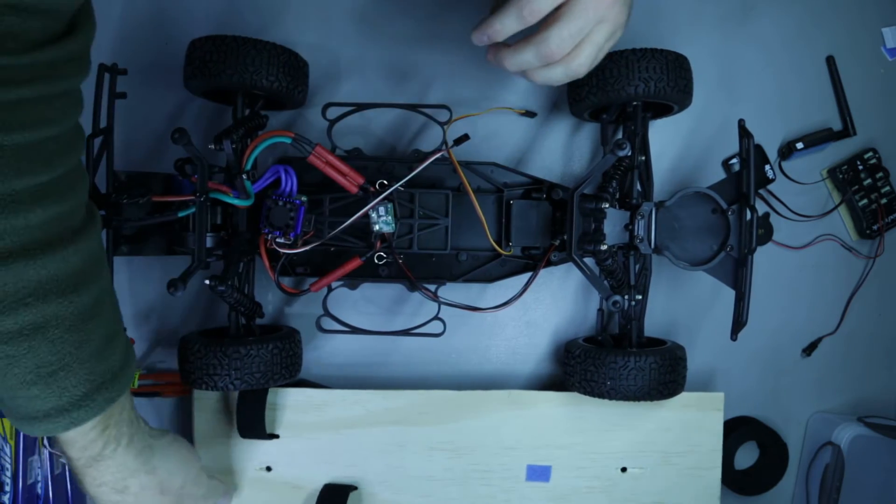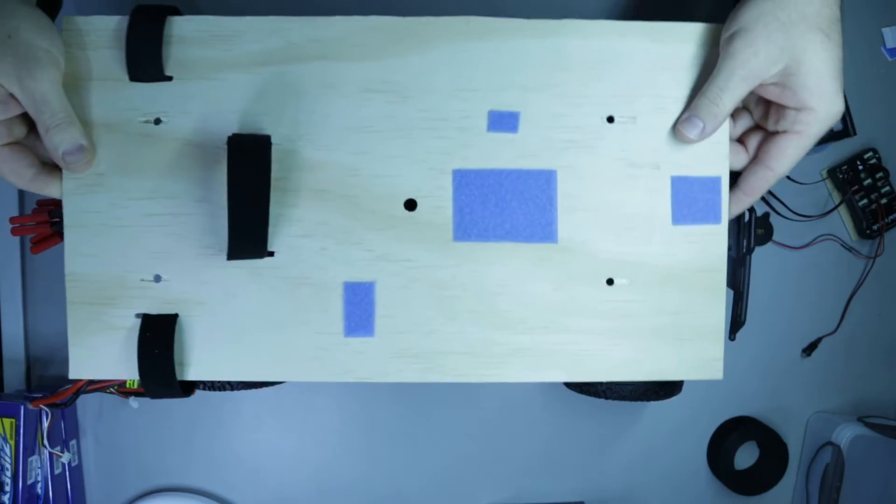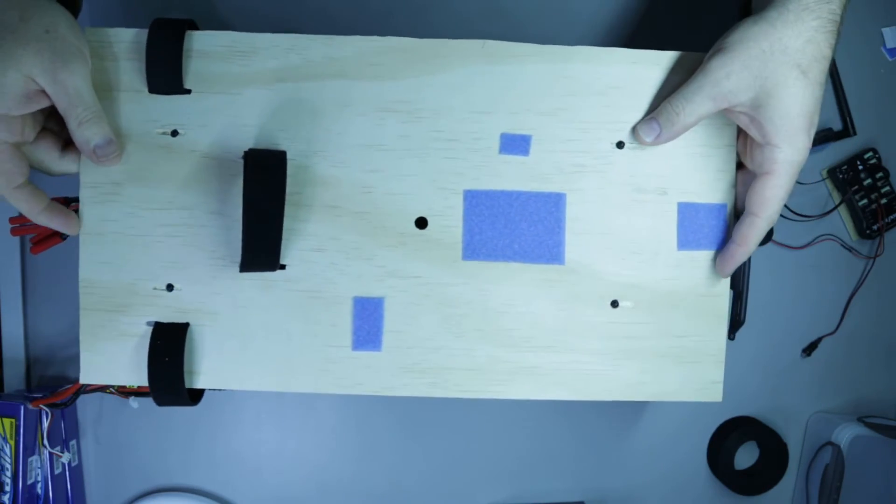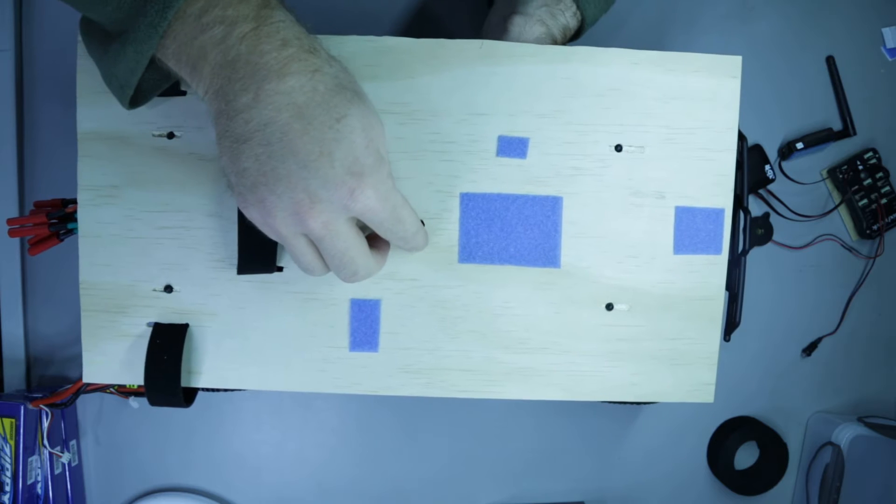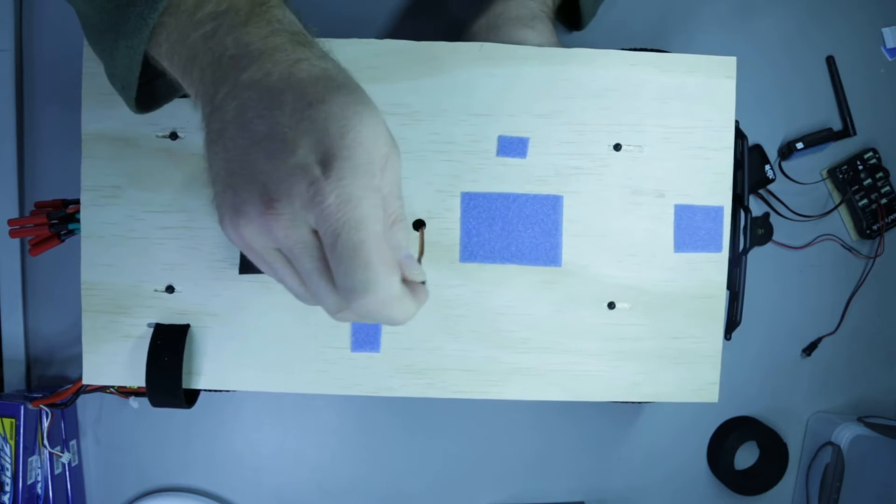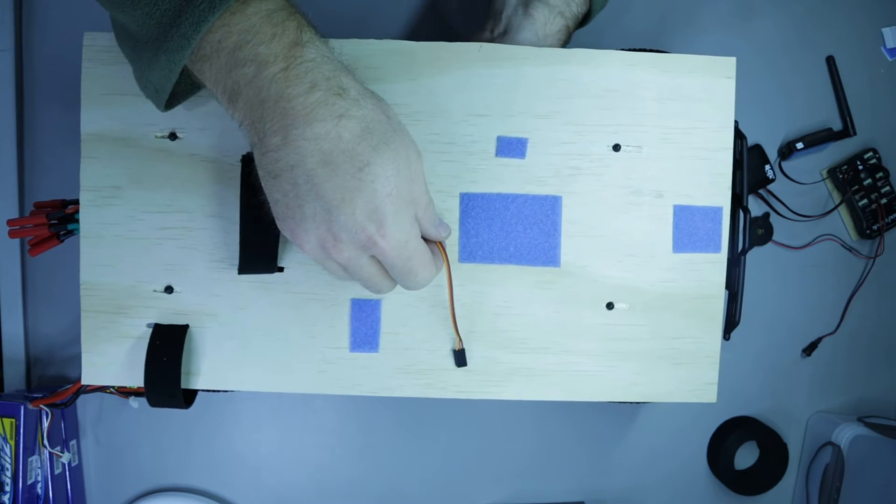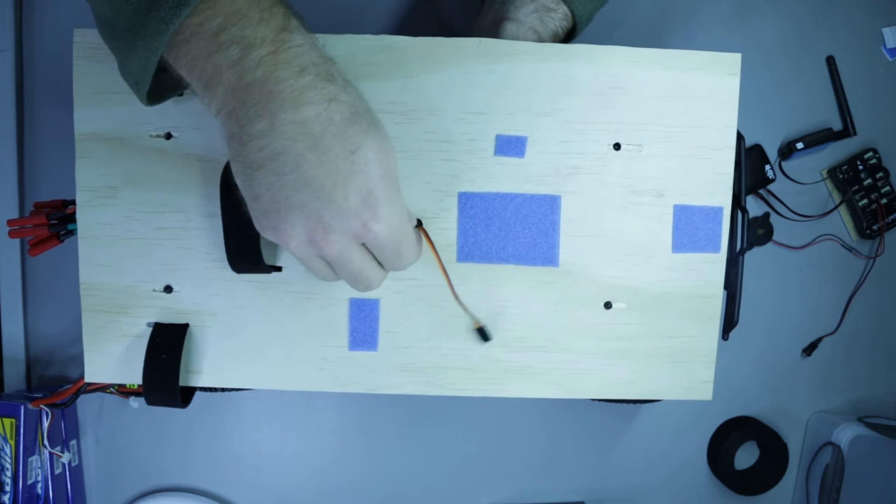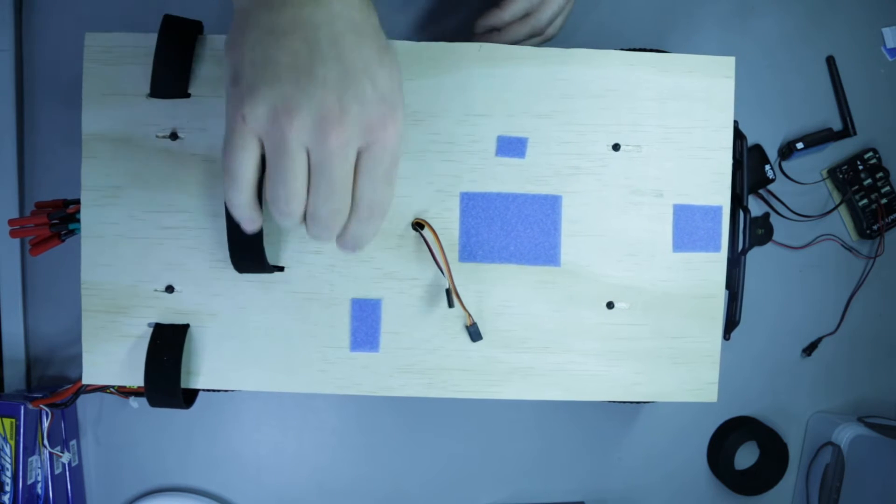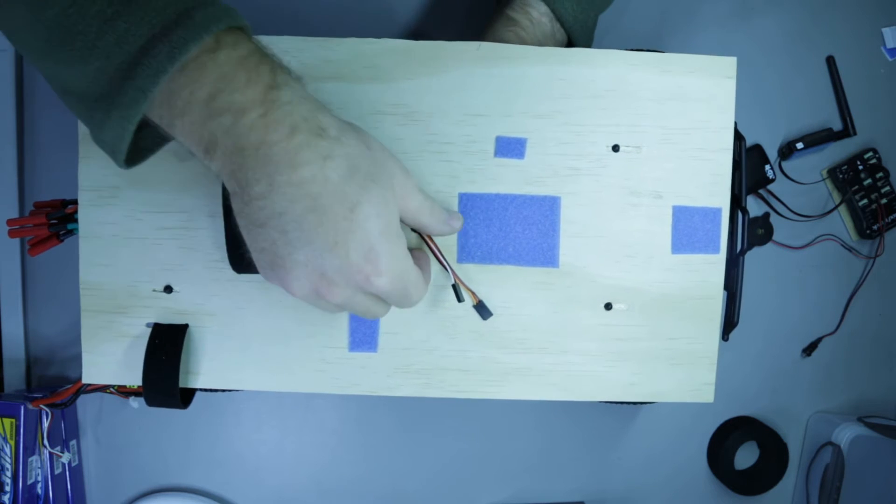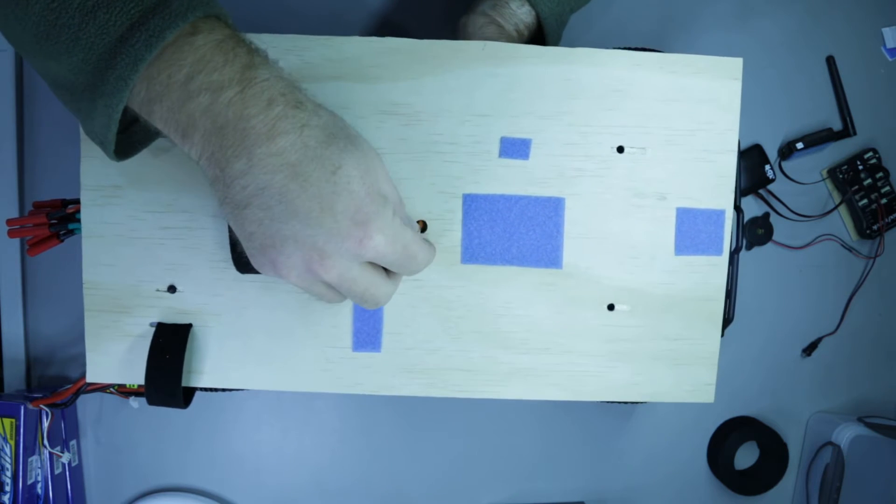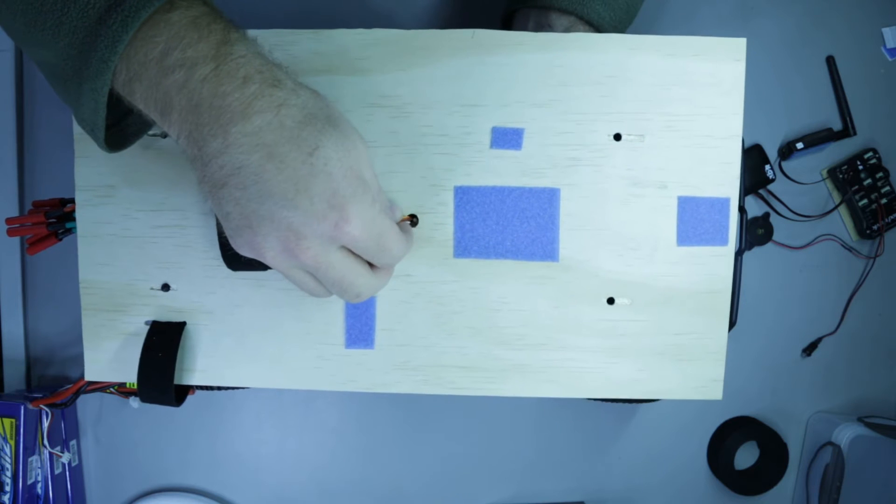So now it's just a matter of putting the board on. I'll just run some of these cables through. There's one, it's the steering servo, that's the power servo for the speed controller, and last but not least the power connector for the Pixhawk.